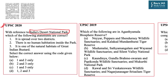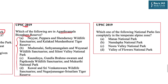In UPSC 2019, a question was asked in the context of Agasthyamala Biosphere Reserve, asking which wildlife sanctuaries and tiger reserves are located within it — again about aerial spread. Similarly, another 2019 question was about which national parks have a temperate alpine zone. On these lines, today we will discuss certain key features related to Bhitarkanika Wildlife Sanctuary.